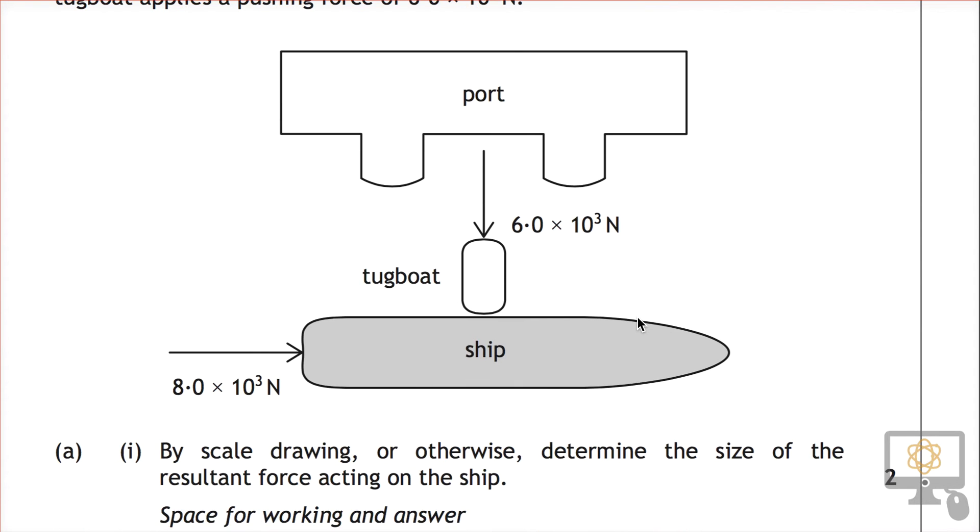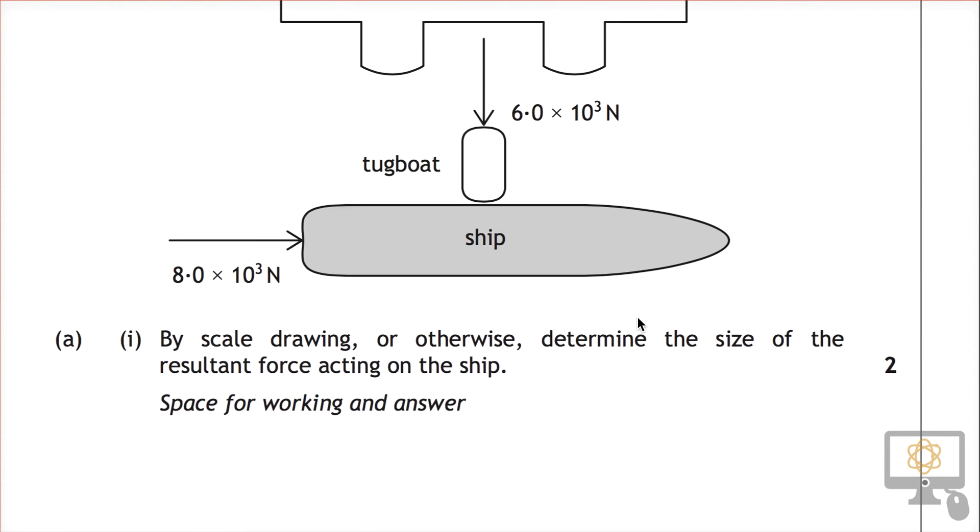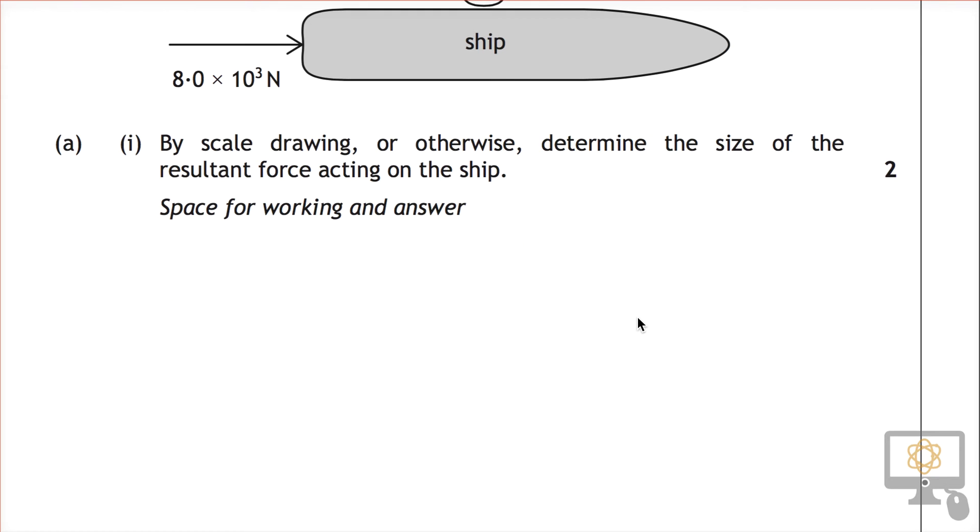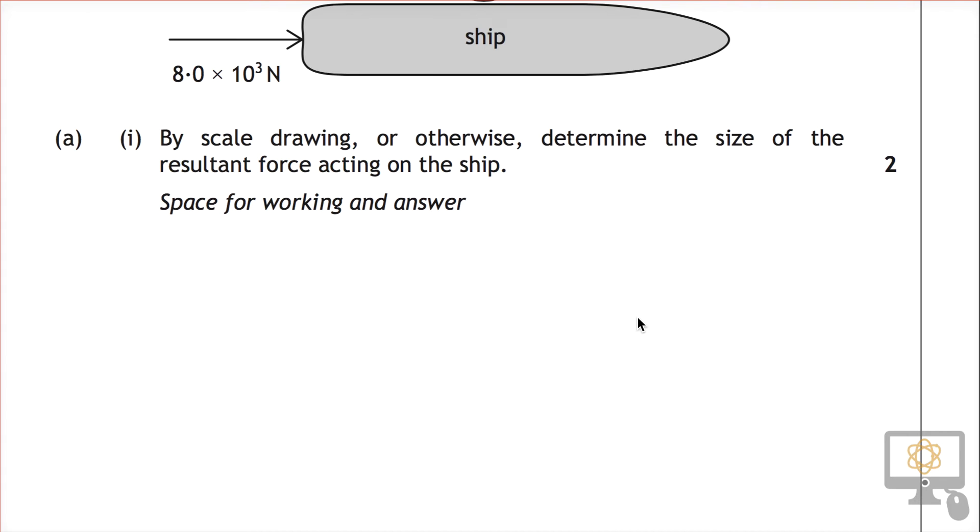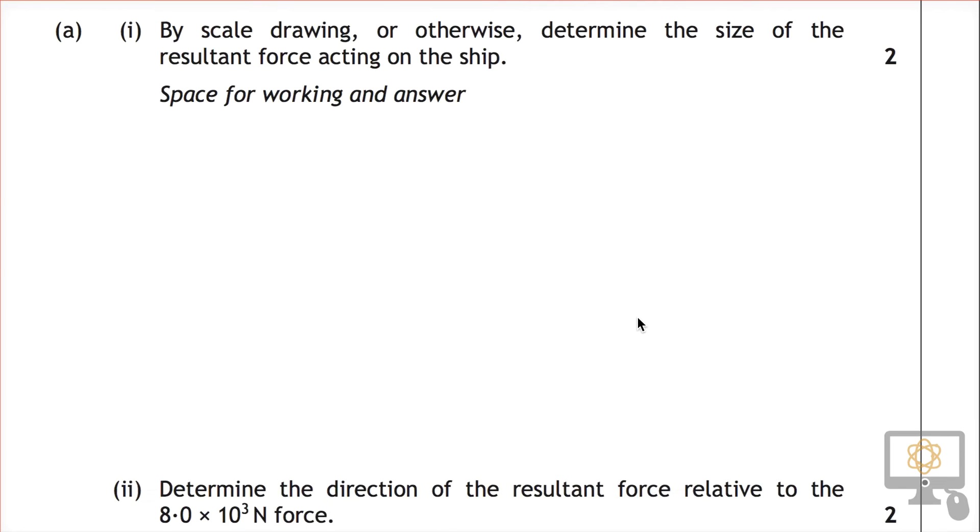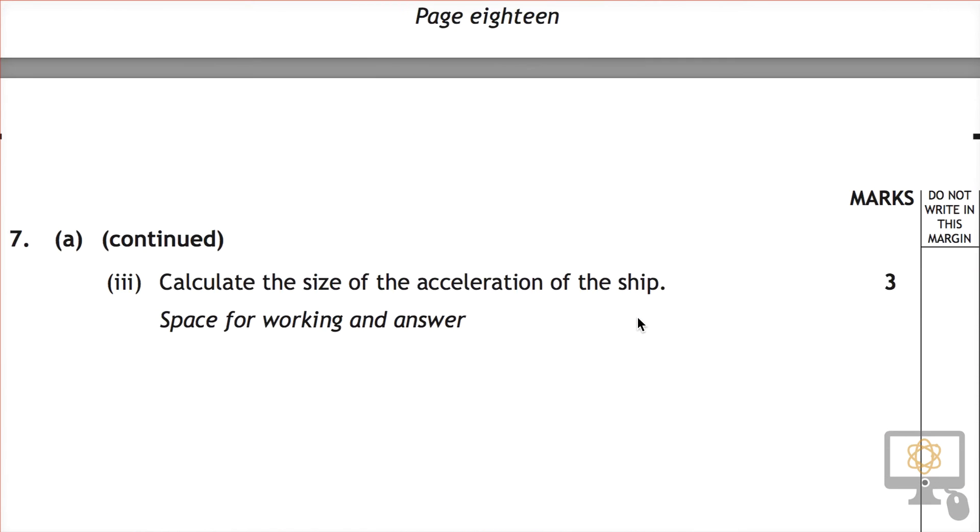The question asked us to determine the size of the resultant force. Now if you've done question 7a part 1, you'll have figured out that that's 10 times 10 to the 3 Newtons. So that is the resultant force acting on the ship. Let's go and see if we can solve this problem.